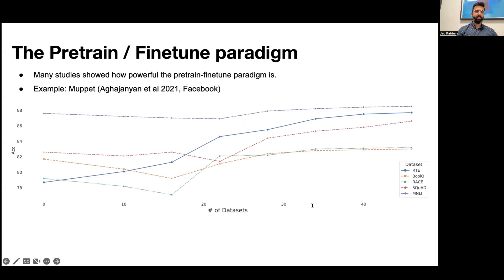Now many studies showed how powerful this paradigm is. One of them is from 2021 from FAIR, the Muppet paper, in which they looked at more than 50 fine-tuning tasks and they noticed that beyond a certain number of data sets or fine-tuning tasks.